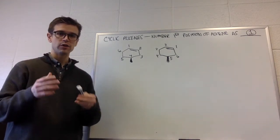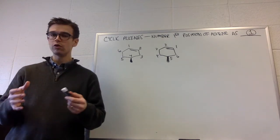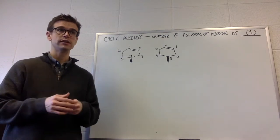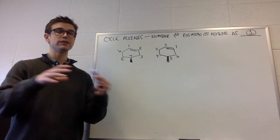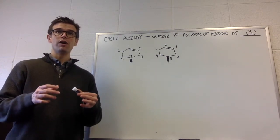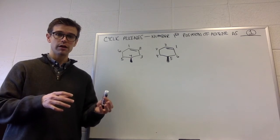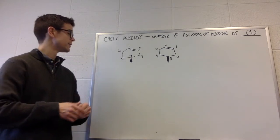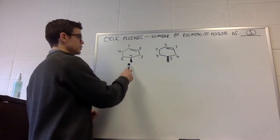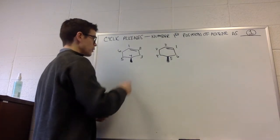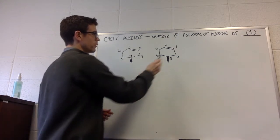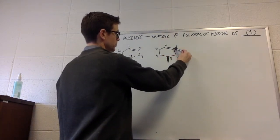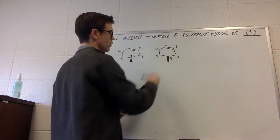To figure that out, you would go back to your old naming rules, and one of the rules was if all things are equal, we want to have the lowest number possible for our substituents. In this case, our only substituent is a methyl group, and if we number from this alkene position, that substituent is position four. But if we number from this position as number one and we number it counterclockwise, that position is number five.